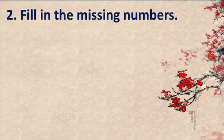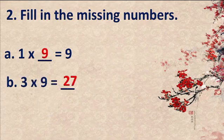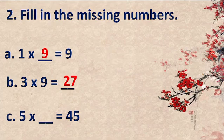Is it clear? The second question: fill in the missing numbers. One multiply by dash, which is equal to 9. Now we are going to multiply by one number to get the answer 9. One nines are 9. Three nines are 27. Five multiply by dash, which is equal to 45. We are going to find out the missing number. Five nines are 45.